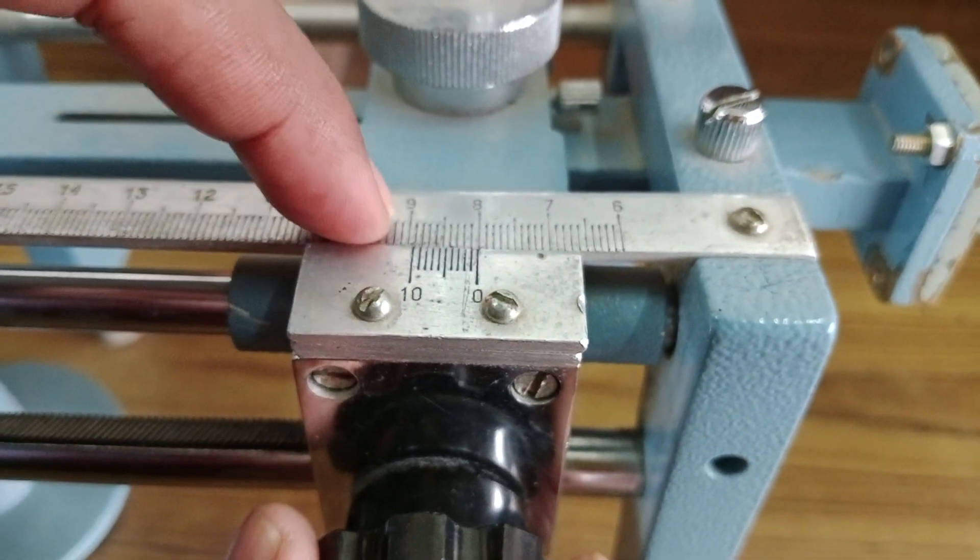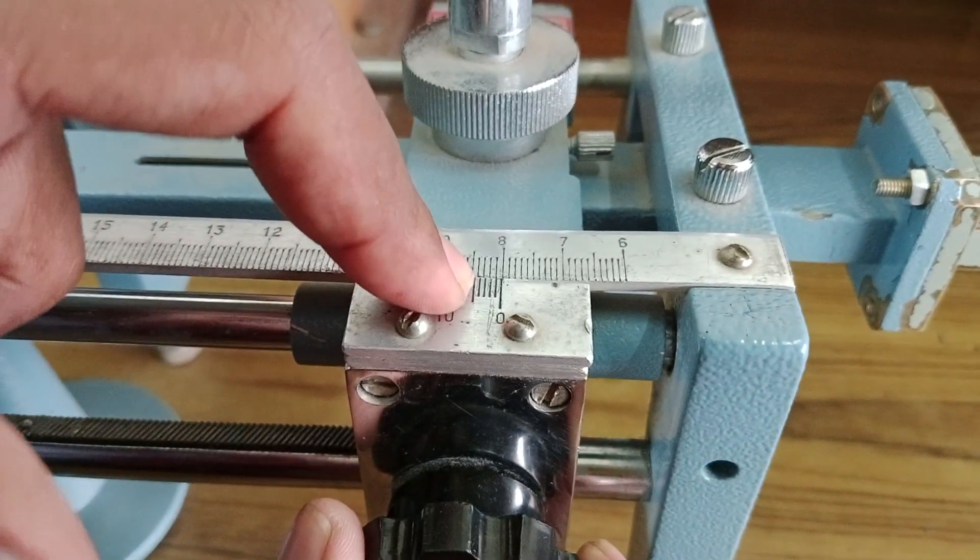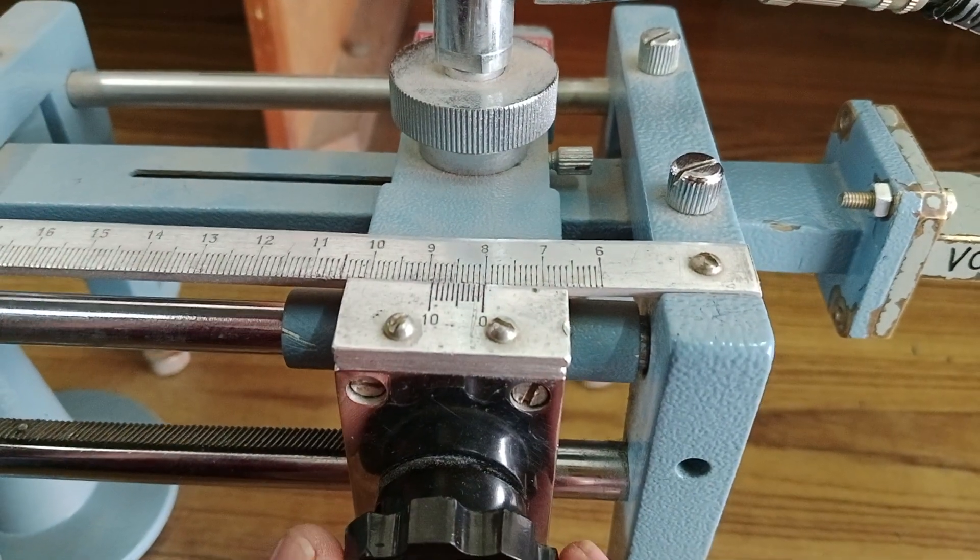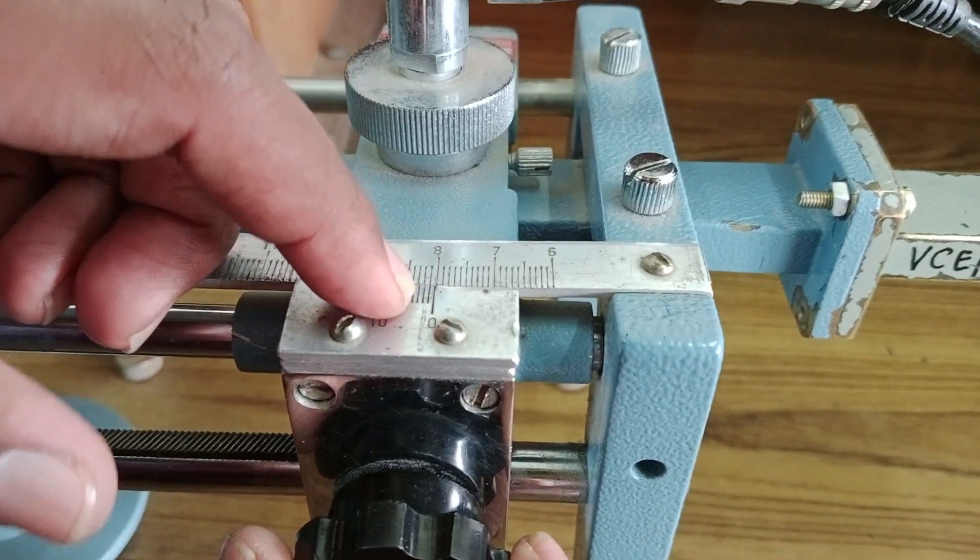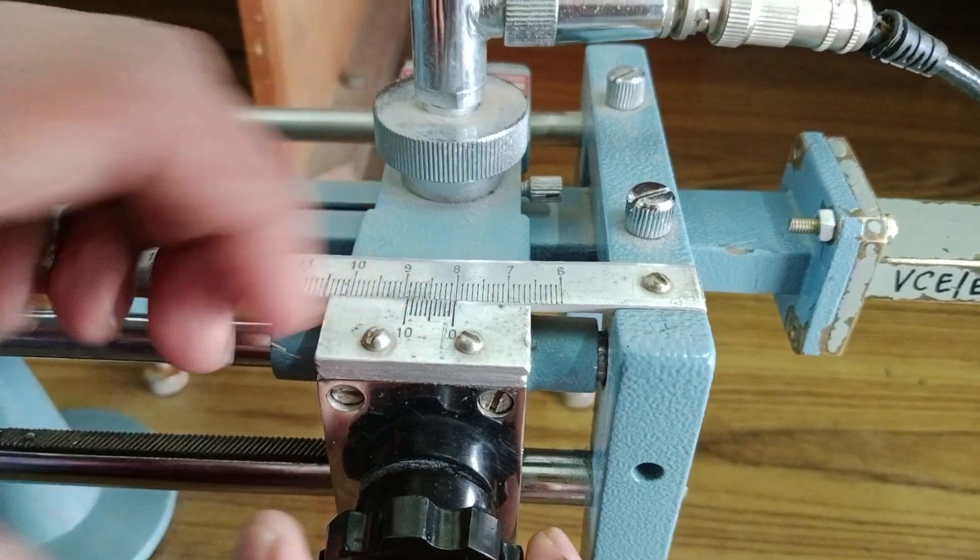And after that, suppose if you observe these two scales, whichever division of the sliding scale is coinciding with the fixed scale, that is the decimal after the second digit. That is if you see here, I am feeling that the fourth line is coinciding. So my distance is eight point zero four.